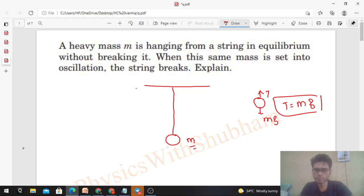When this small m is set into oscillation, then it will move back and forth on this curvature. So whenever a particle is moving in some curvature, there is a net force on the particle towards the center of curvature, which is the centripetal force.